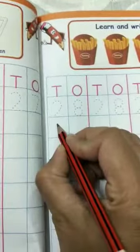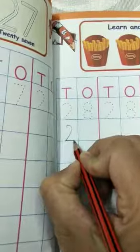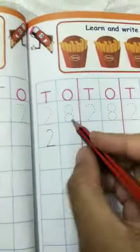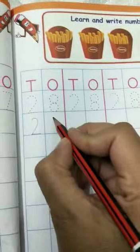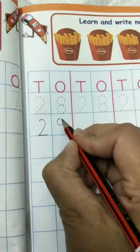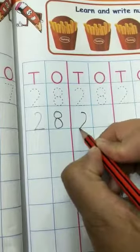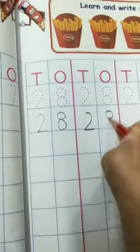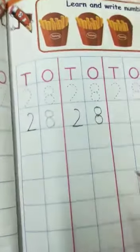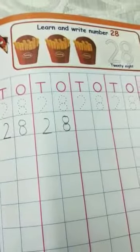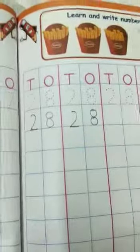So how do we write 28? We will write 2 with a little bit of curve, then we will write 8, one circle and then another circle. This way we will write number 28.